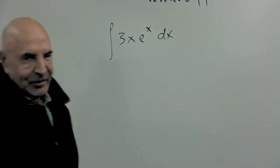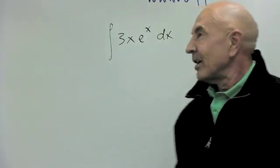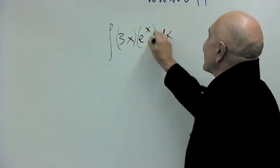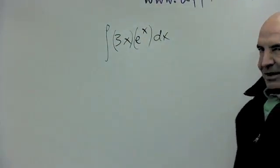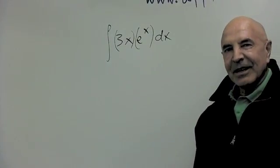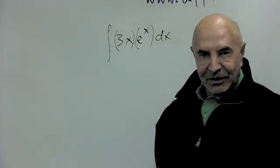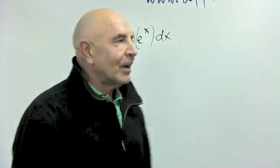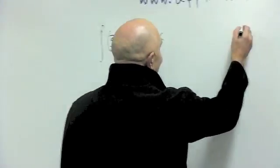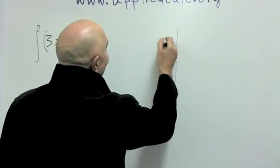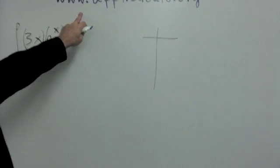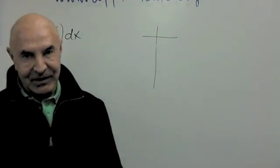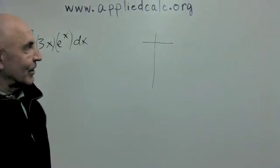Here we have a product of two functions: 3x and e to the x. The problem is there's no such thing as a product rule. Here's an interesting way of doing it — this is the method you can find and read about in plycalc.org, which is about the best textbook there is in the world.